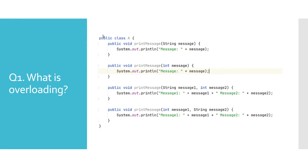In the example displayed here, you can see class A having multiple printMessage methods. The first two methods have only one parameter but differ by their types. The second and third differ by number of actual parameters. The difference between the third and fourth method is only in the order of the parameters, which still makes it a valid overloaded method.